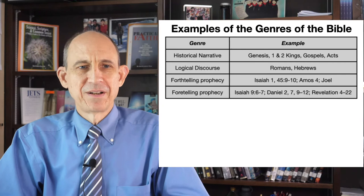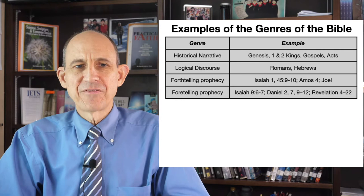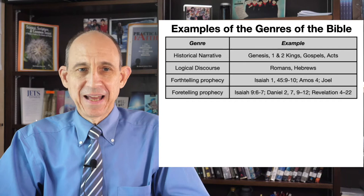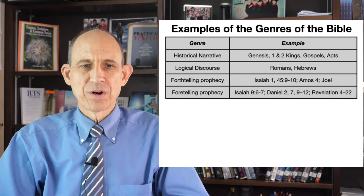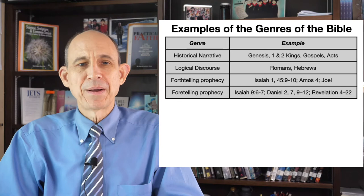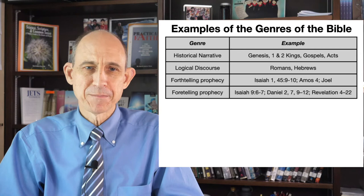Then we're going to look at two kinds of prophecy: forth-telling prophecy and foretelling prophecy, also called ethical prophecy and predictive prophecy. Forth-telling or ethical prophecy is essentially preaching aimed at the recipients to help them know how God is viewing their behavior and to deliver a message — which is very often a call to repentance, a call to turn back to God.